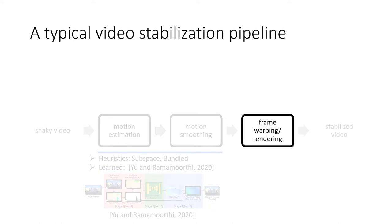With the estimated and smoothed motion, the final step is to render the stabilized frames. Most existing methods synthesize frames by directly warping each input frame to the stabilized location, crop off the blank areas, and generate output videos with a lower resolution to maintain a rectangle shape.